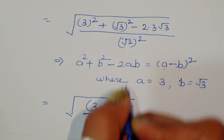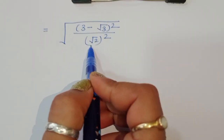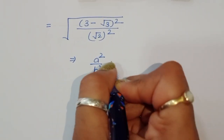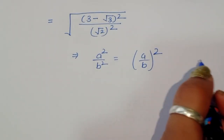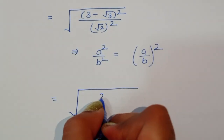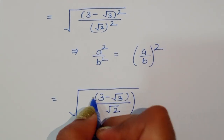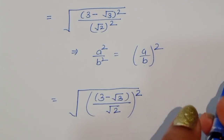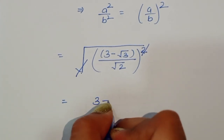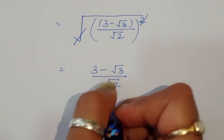Now we use the formula: a squared upon b squared equals (a upon b) whole squared. Applying this, we can write the expression as the square root of (3 minus square root of 3) divided by square root of 2, whole squared. Since square and square root cancel, we get (3 minus square root of 3) divided by square root of 2.